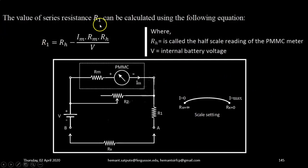The value of series resistance R1 can be calculated using the following equation: R1 equals RH minus IM times RM times RH upon V, where RH is called the half scale reading of the PMMC meter, V is the internal battery voltage. I hope the thing is clear.